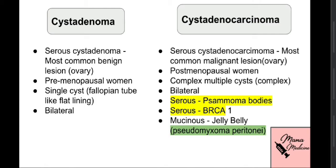A very high-yield fact: serous cyst adenocarcinoma contains psammoma bodies — calcifications found in only a few tumors in the body. Additionally, BRCA1 mutation is linked to serous cyst adenocarcinoma, as well as to breast cancer and fallopian tube cancer.